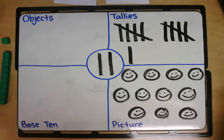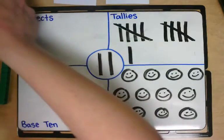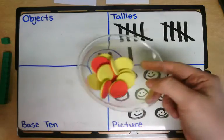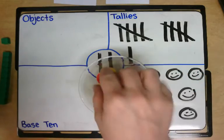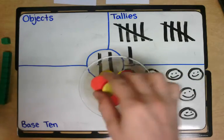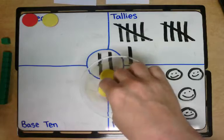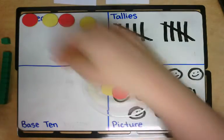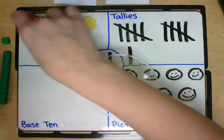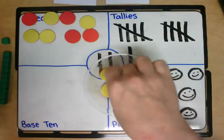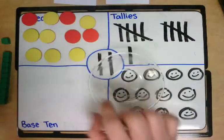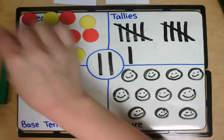We could represent the number eleven using objects. Right here I have eleven objects and you can kind of see what they look like here in my bowl. Let's count them out and see what it looks like when we lay them out. One, two, three, four, five, six, seven, eight, nine, ten, eleven. That is what eleven objects looks like.